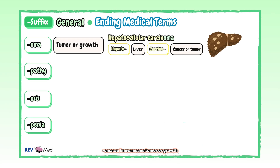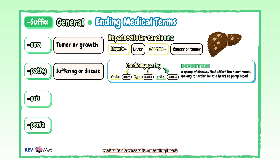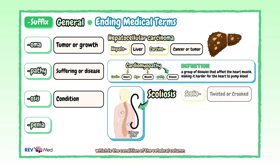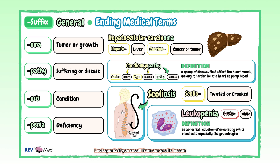"-Oma" means tumor or growth. "-Pathy" is for suffering or disease. For example, we discussed in our root words lesson the term cardiomyopathy — broken down as "cardio" meaning heart, "myo" for muscle, and suffix "-pathy" for disease. "-Osis" is for condition, such as scoliosis, which is a condition of the vertebral column with an abnormal lateral curvature. "-Penia" means deficiency. Leukopenia: if you recall, "leuco" means white, and leukopenia is a condition where the body doesn't have enough disease-fighting leukocytes — the white blood cells — in the blood.